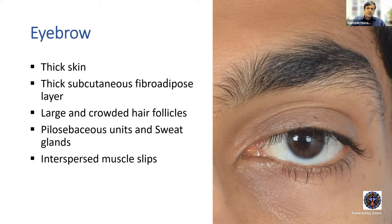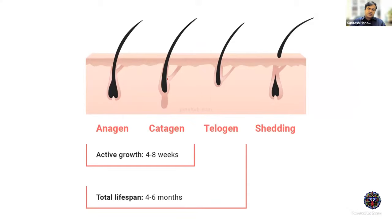The eyebrow has one of the thickest skins in the body. It has a very thick subcutaneous fibroadipose layer — it is the differentiator of the scalp from the eyelid, representing an abrupt transition. It has large, crowded hair follicles; in fact, hair density in parts of the brow is higher than in some parts of the scalp. It also has pilosebaceous units and sweat glands. The brow is intricately related to the frontalis, procerus, corrugator supercilii, and depressor supercilii muscles.